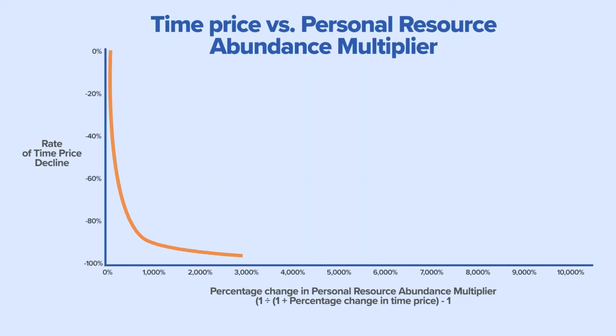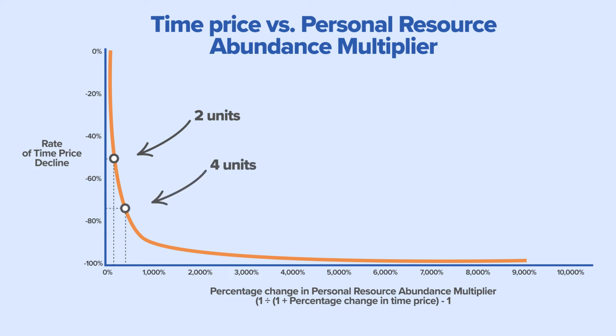Time price can only decrease by 100%, but Personal Resource Abundance can increase infinitely. For example, when the time price falls by 50%, the same amount of time will now get you 2 units, or 100% more. If the time price falls by 75%, you can now get 4 units for the same amount of time, or 300% more. A 90% decrease in the time price will yield a 900% increase — in other words, you will get 10 units.